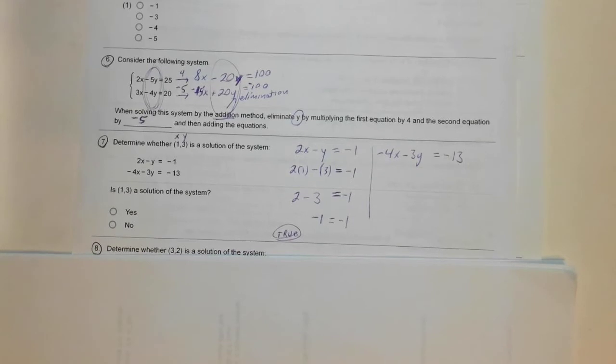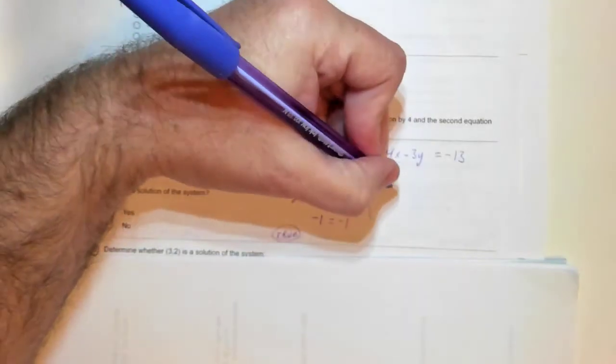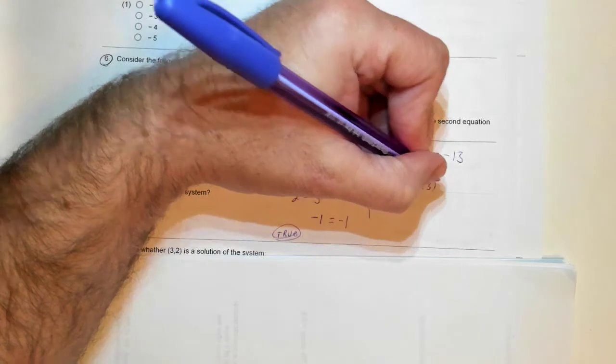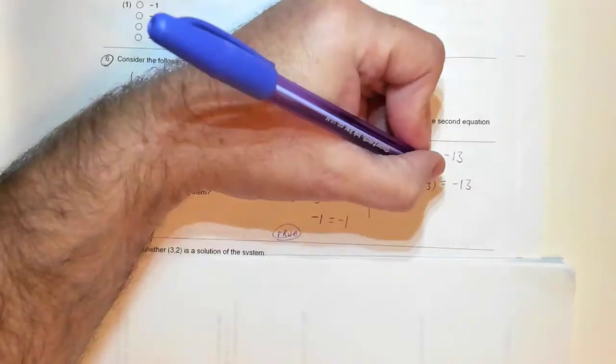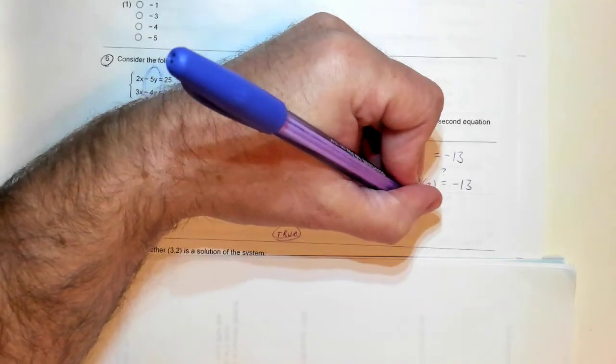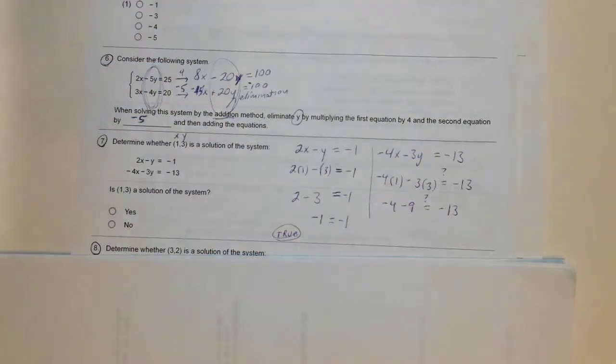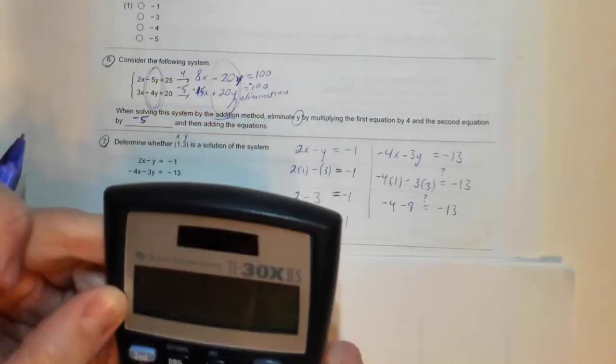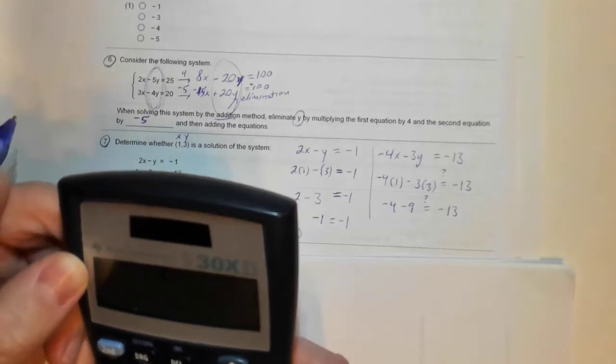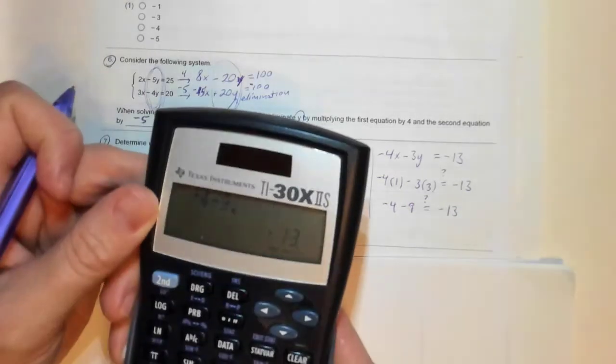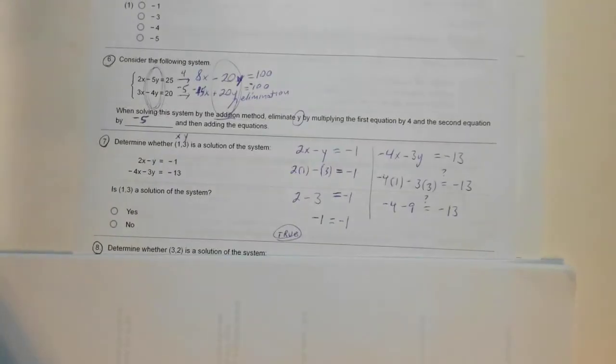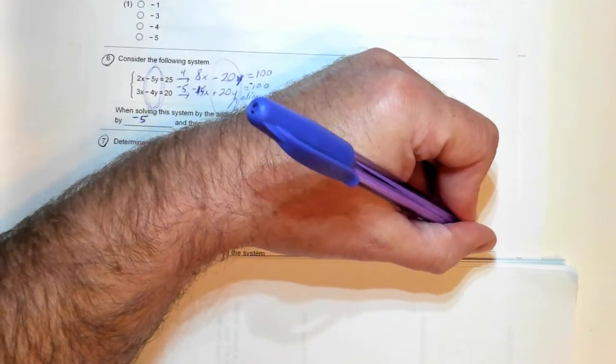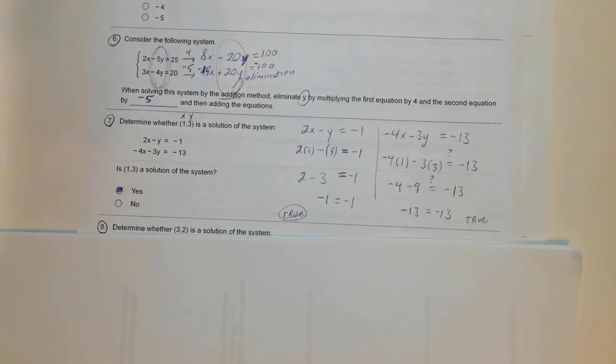So it needs to be true for both. Let's try it. Minus 4 times 1 minus 3 times 3. Do these equal 13? So minus 4 minus 9, is that equal to 13? Well, yeah, of course, but we can double check. Minus 4 minus 9 is minus 13. So it is true. Minus 13 equals minus 13. So because it works for both, it is a solution.